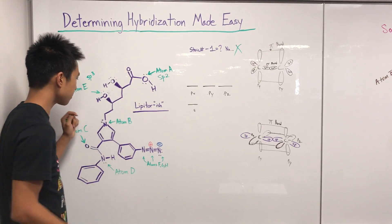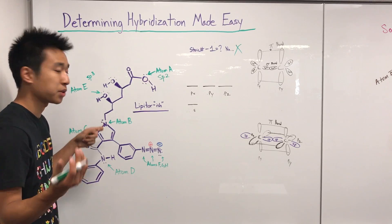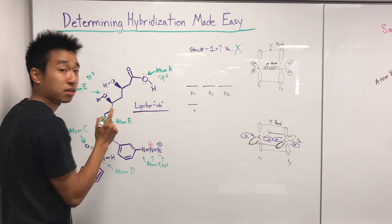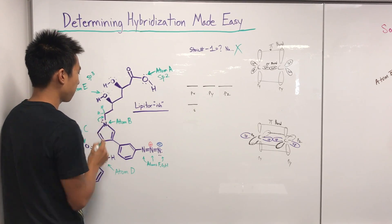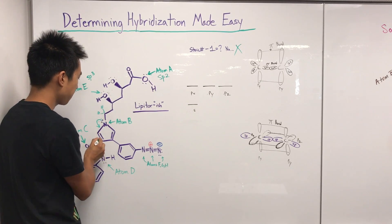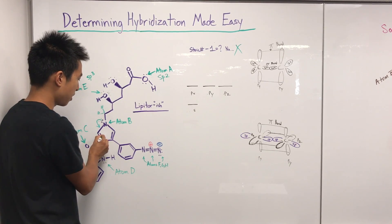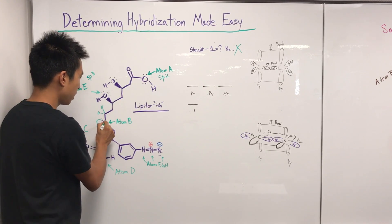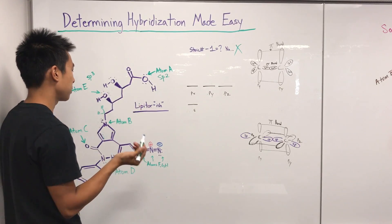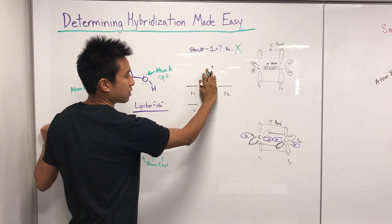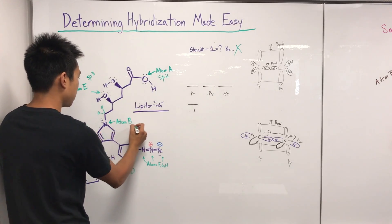Next, atom B — a nitrogen. Its maximum number of pi bonds is one. It has lone pairs, but they can't go up because the adjacent carbon already has four bonds including hydrogens. However, this bond here can resonate out to the right, giving nitrogen a pi bond. Similarly, nitrogen could resonate the other way, but it can only go one way or the other — maximum is still one pi bond. So py is sacrificed, leaving two p's and s, making atom B sp2.